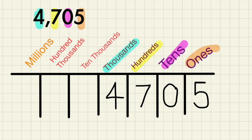After writing the number in the place value chart we can write it in word form. So we start off on the left hand side with the number 4 and it is in the thousands place. So we can write 4,000. And then afterwards we can move to the right hand side which is number 7 and it is 700.